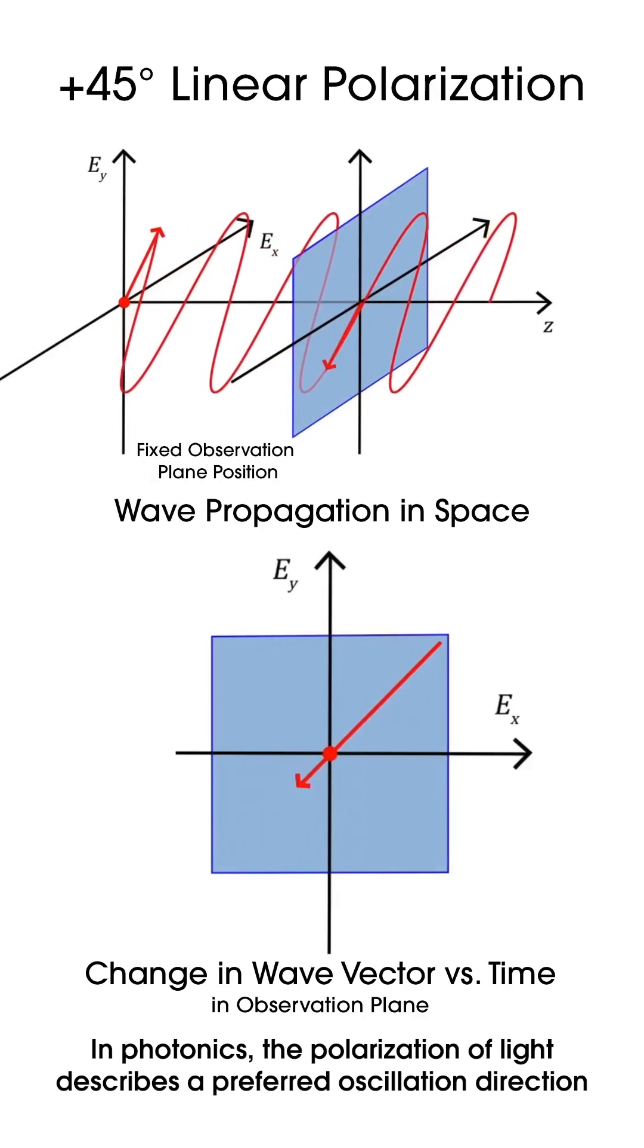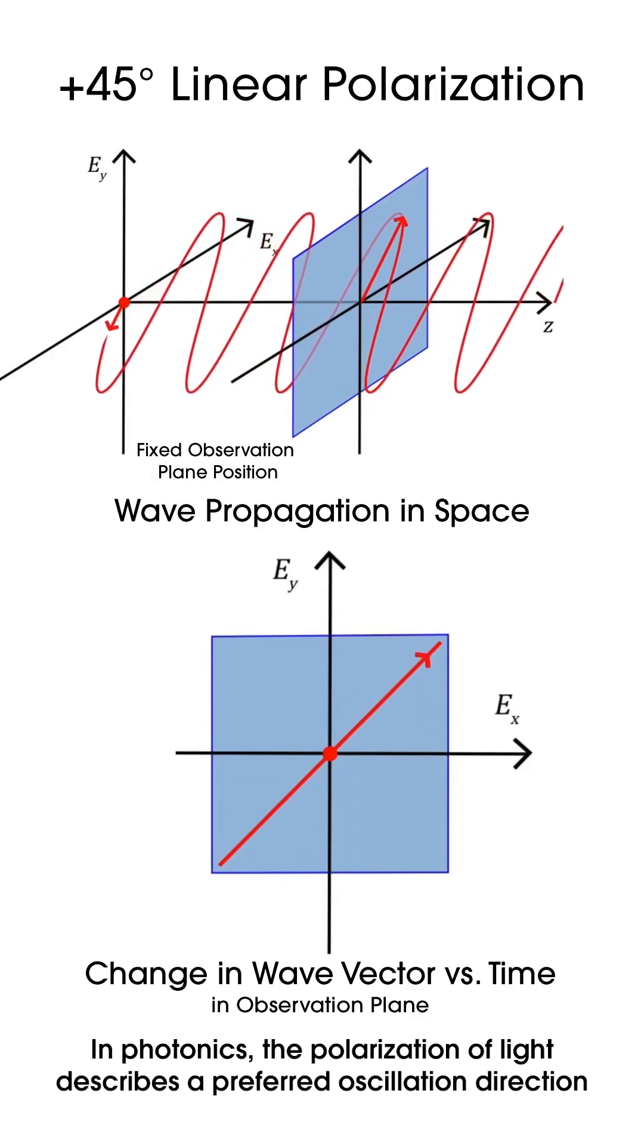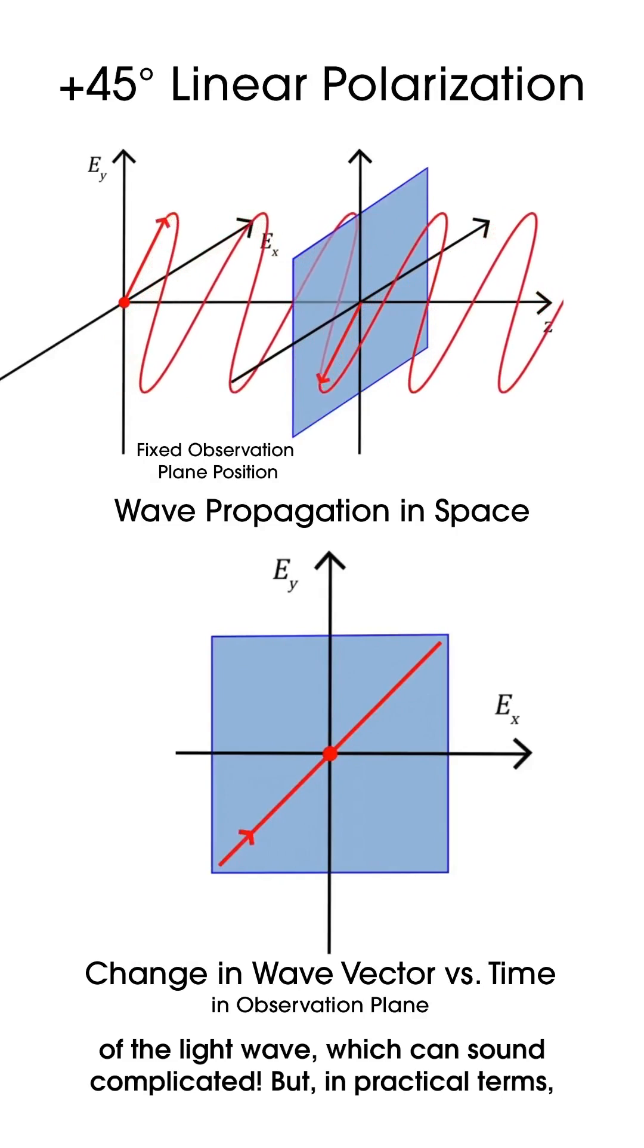In photonics, the polarization of light describes a preferred oscillation direction of the light wave, which can sound complicated.